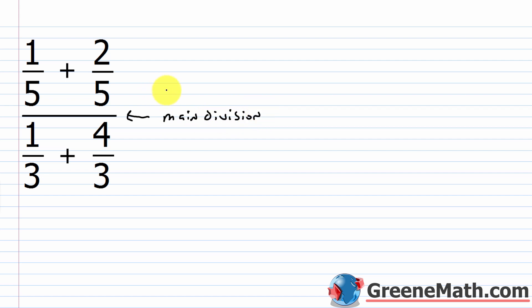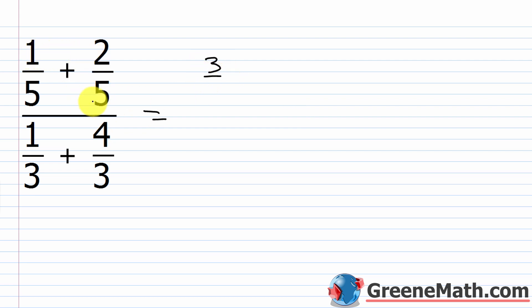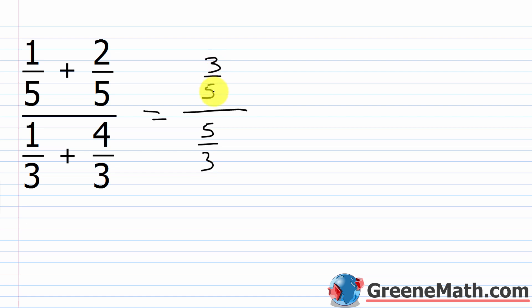If we go through and simplify the numerator, we already have a common denominator. So we have 1/5 plus 2/5; we just add 1 plus 2, that's 3, and put that over the common denominator of 5. In the denominator, we have 1/3 plus 4/3 — again, common denominator — so 1 plus 4 is 5, over the common denominator of 3. So now we have a complex fraction that's nothing more than a division problem: 3/5 divided by 5/3.